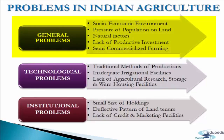The first general problem is the socio-economic environment. Various socio-economic factors like farmers' conservative outlook, ignorance, and illiteracy stand in the way of adopting modern technology in Indian agriculture. Until this discouraging atmosphere is changed, it is not at all feasible to modernize and improve the condition of Indian agriculture.